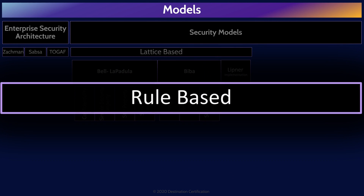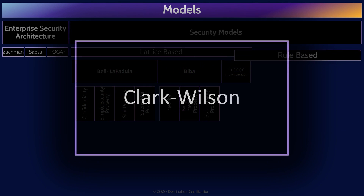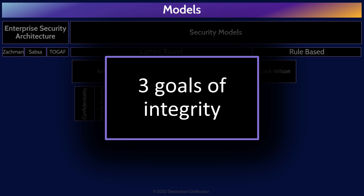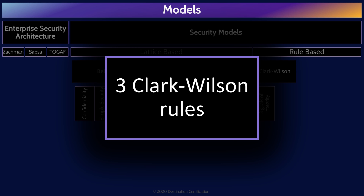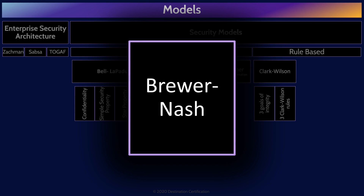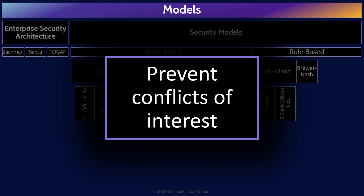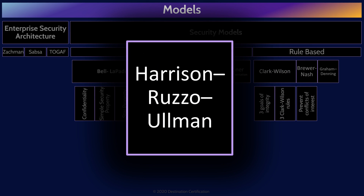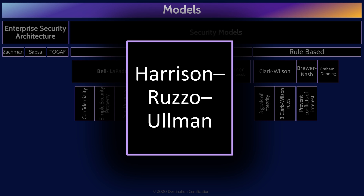Now let's talk about rule-based models. First, we have the Clark-Wilson model, which just like Biba is all about integrity — but it goes a lot deeper. It defines three goals of integrity: preventing unauthorized subjects from making any changes, preventing authorized subjects from making bad changes, and maintaining the consistency of the system. To achieve these goals, it defines three rules: well-formed transactions, separation of duties, and the access triple — subject, program, and object. The Brewer-Nash model, also known as the Chinese Wall model, has one goal: preventing conflicts of interest. Graham-Denning specifies rules about allowing subjects access to an object, and Harrison-Ruzzo-Ullman is an enhancement of Graham-Denning that adds generic rights — but just know these as rule-based models.